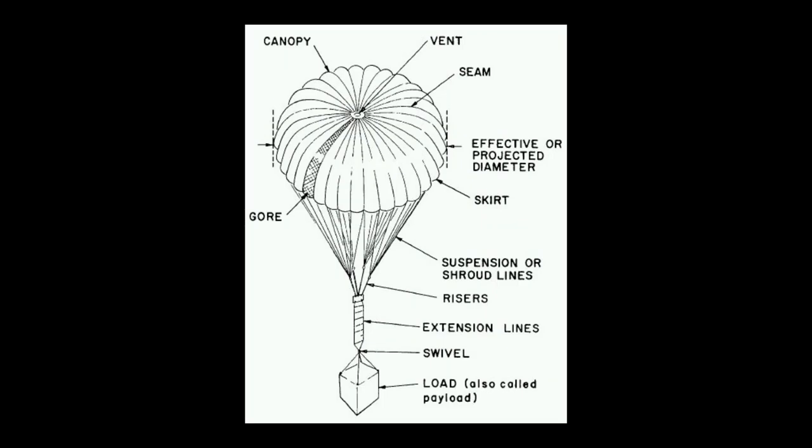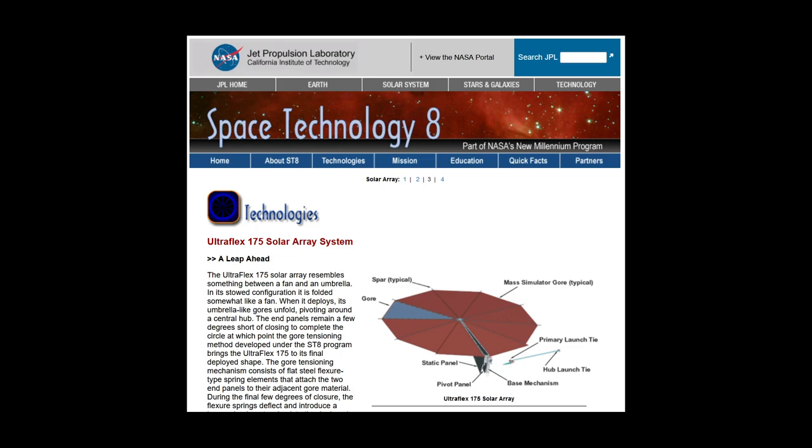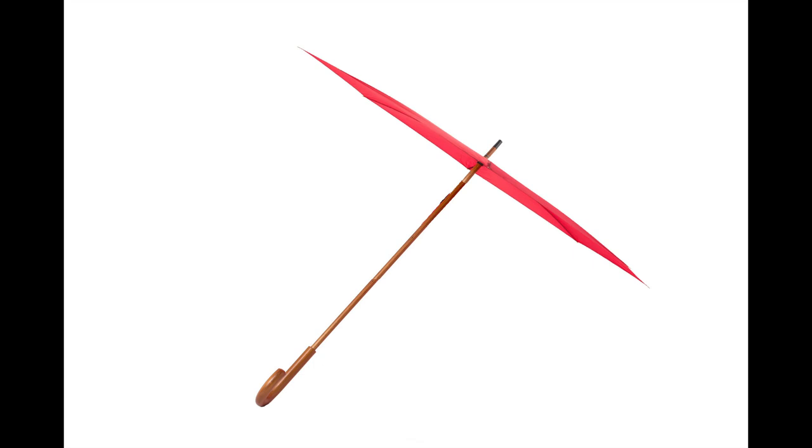A gore is any pointy, angular piece of material that adds curvature to a surface. The fabric panels in umbrellas? Those are gores. Without them, the umbrella would just be a flat plane and have terrible drainage issues.